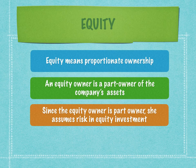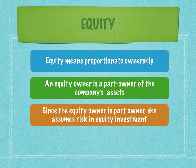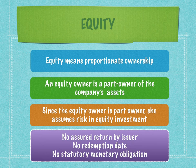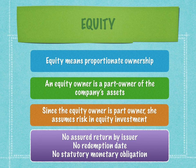The equity owner assumes the risk in equity investments. Every time the business does not declare dividends, or the companies don't declare interesting corporate actions like bonuses and stock splits, the shareholders get agitated and run the risk of equity ownership. Equity has three characteristics: there is no assured return by the issuer. The company that issues equity can decide whether, when, and how much dividends to give — everything is determined by the issuer, though shareholder approval is needed at a later stage.